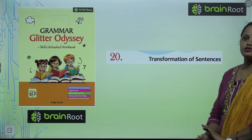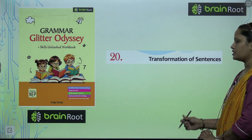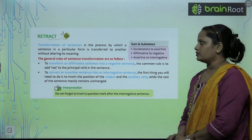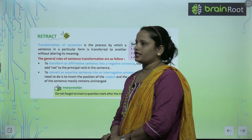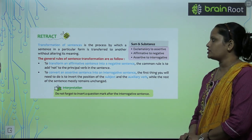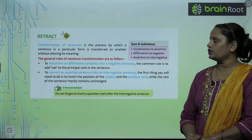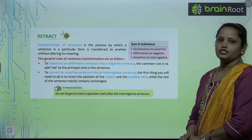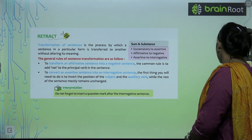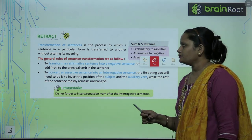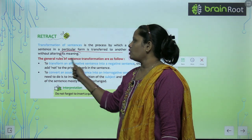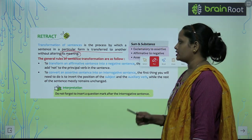The name of the chapter is Transformation of Sentences — how sentences are changed, this we will learn here. Transformation of Sentences is the process by which a sentence in a particular form is transferred to another without altering its meaning. So transformation ka matlab hai children ki sentence jo bhi diya gaya hai, usko change kar dena doosare form mein bina uske meaning ko change kiye.